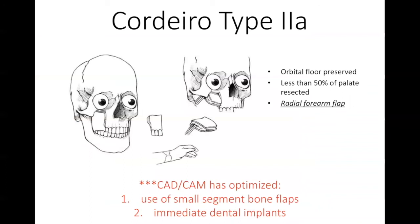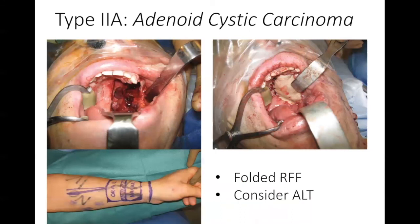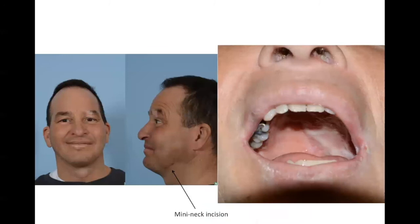Let's talk about the infrastructure maxillectomy. Traditionally, these are small defects which preserve the orbital floor with a palatal section of less than 50% — from Dr. Cordero's classification system. Usually, since so few teeth are being removed, we perform a soft tissue flap such as a folded radial forearm flap. However, with CAD-CAM, we are now able to use small segment bone flaps and place immediate dental implants. A case reconstructed the traditional way with an infrastructure palatectomy uses a folded radial forearm flap for both oral and nasal lining, or an ALT flap can be considered.